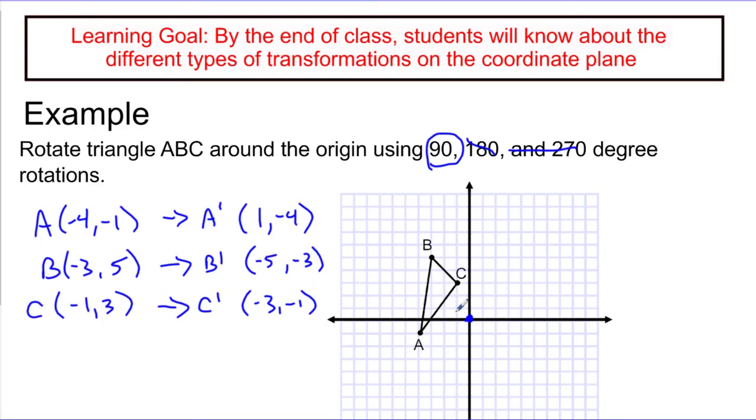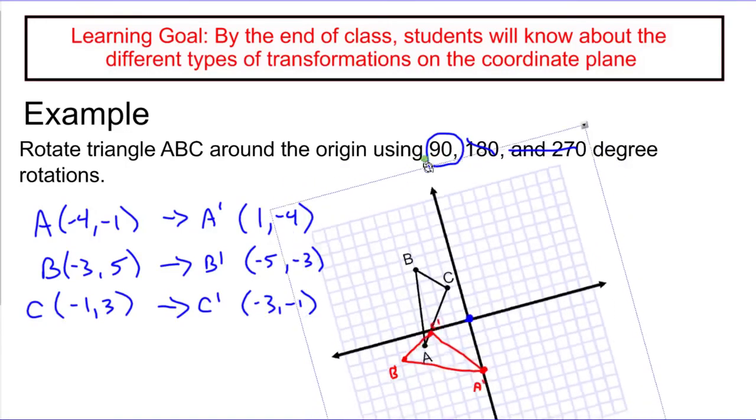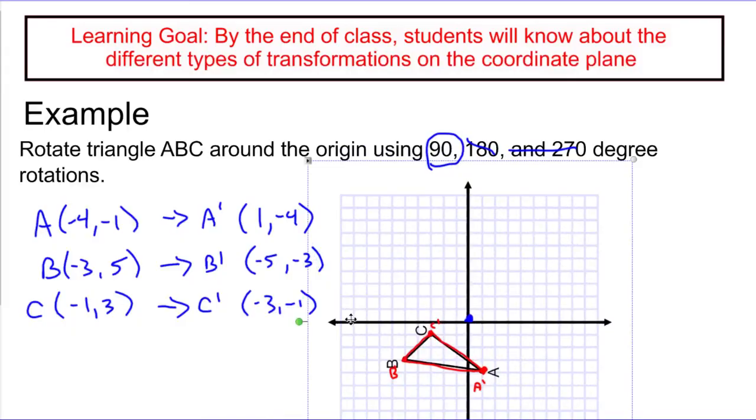If I graph each of these points, these new ones, 1 and then down 4, I would put it right here, that's A. And then B would be negative 5 and then down 3, that would be B. And then C would be negative 3 and then down 1, that would be right here. And then if I connect those together, I get a rotation of 90 degrees around the origin. If you want to see what that looks like, if I take my whole graph here and I just rotate it one quarter turn in the counterclockwise direction, I exactly hit the new triangle that I just drew.